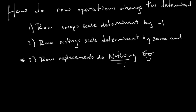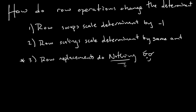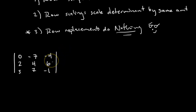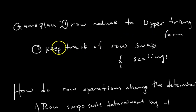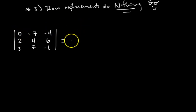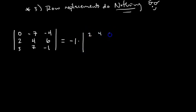Let's do an example. We want to find the determinant of a given matrix using row reduction, not cofactor expansion. The game plan: row reduce to upper triangular form while keeping track of row swaps and scalings. First, let's swap row one and row two to get a leading entry — that's a row swap, so we multiply the determinant by negative one. The determinant equals negative one times the determinant of the row-swapped matrix [2 3 7 / -1 ...].